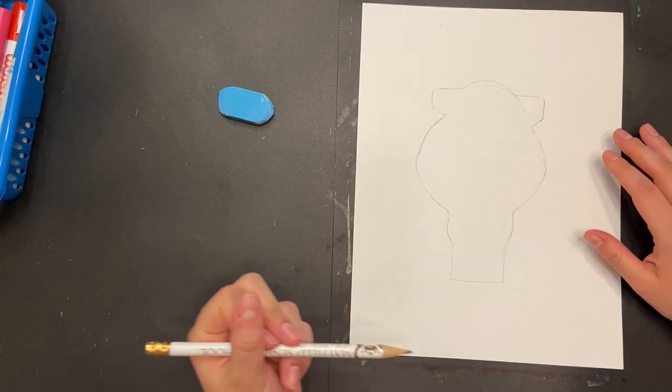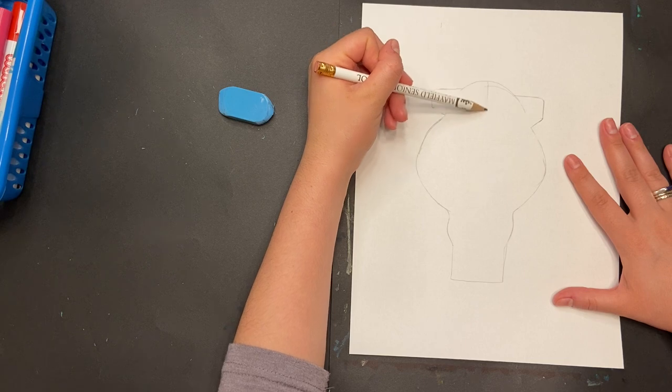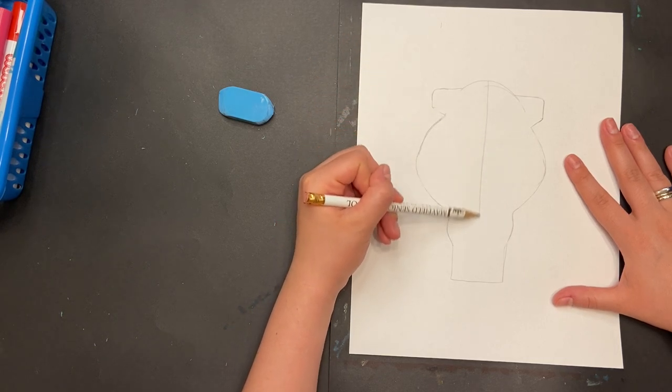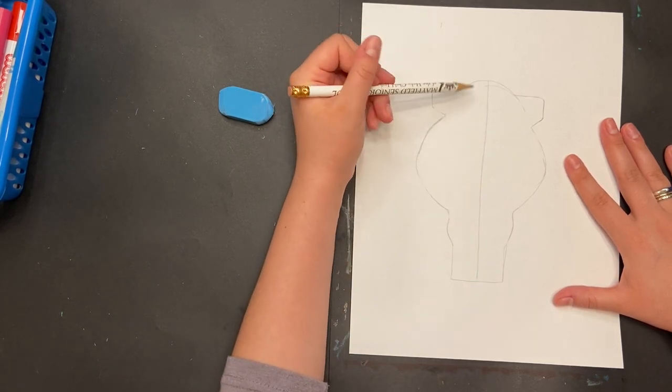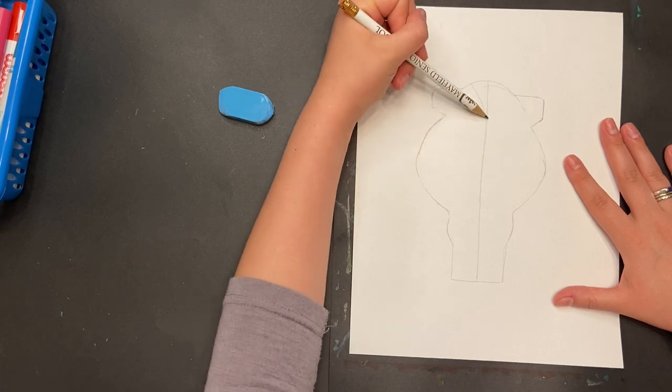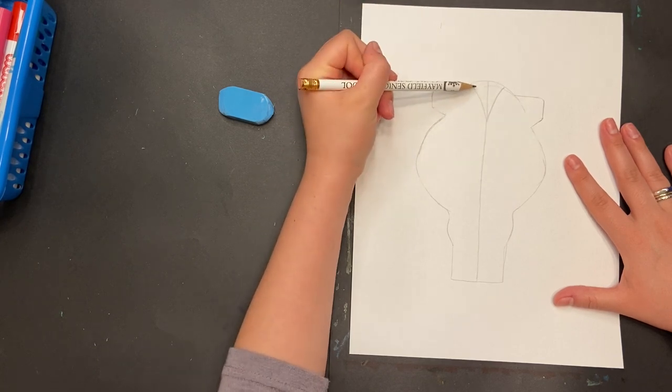Once you've got your outline, take a pencil and draw a light line down the middle of your cow's skull. Now you're going to start adding some of the detail.